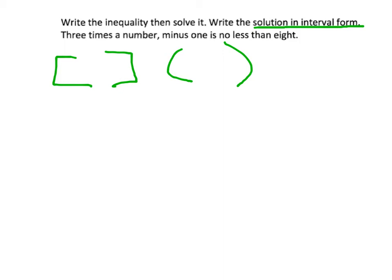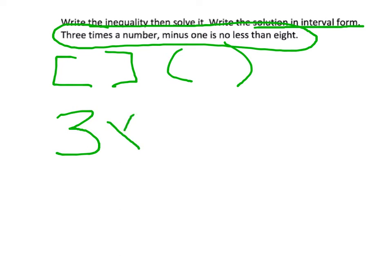The next thing we need to address is what our inequality is. In order to solve this inequality, we first need to translate the sentence given. We know that three times a number would give us three times any variable. Let's choose x.